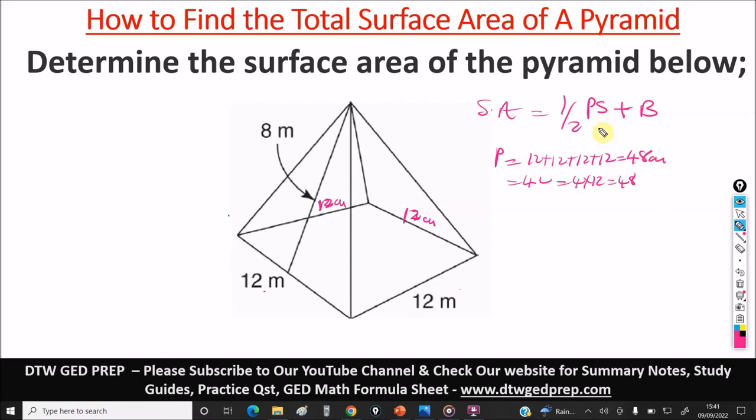Then S means the slant height of the pyramid. The slant height, and it is 8 meters. This is 8 meters.